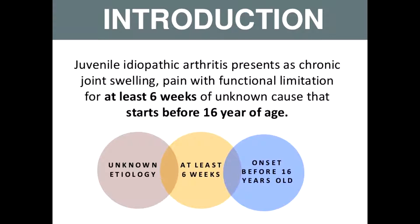The prototype is Juvenile Rheumatoid Arthritis, now labeled as Juvenile Idiopathic Arthritis. This is defined as an entity in which there is chronic joint swelling and pain with limited movements for at least six weeks duration. We must exclude patients having other joint problems. The patient should develop symptoms before 16 years of age and we do not have a well-defined known etiology — that is what we call Juvenile Idiopathic Arthritis.